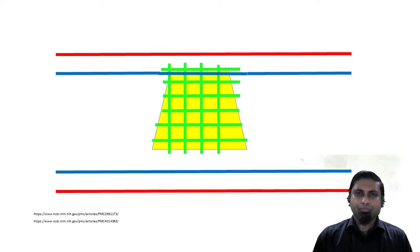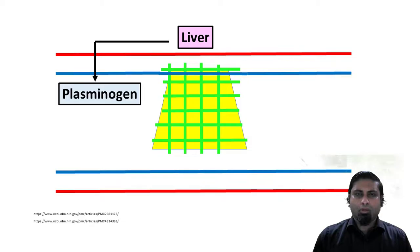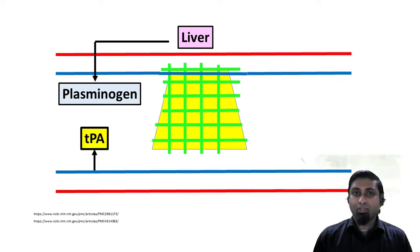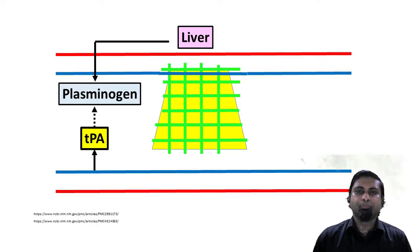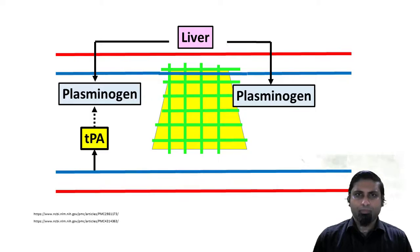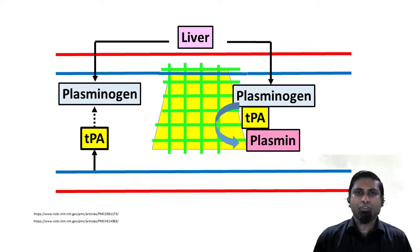The liver produces a protein called plasminogen, and the endothelium produces a protein called tissue plasminogen activator. Tissue plasminogen activator is supposed to activate plasminogen, but as long as plasminogen remains free in the plasma, the ability of tissue plasminogen activator is very poor. On the other hand, if plasminogen is bound to fibrin, tissue plasminogen activator can very effectively convert plasminogen to plasmin, which in turn causes dissolution of the clot.